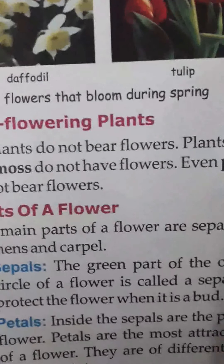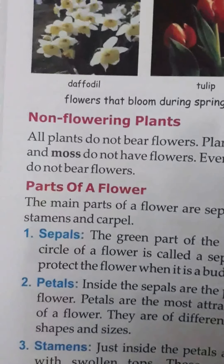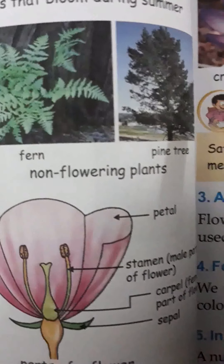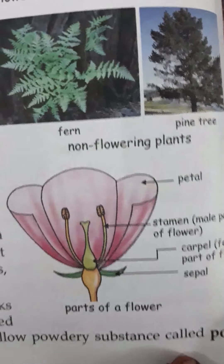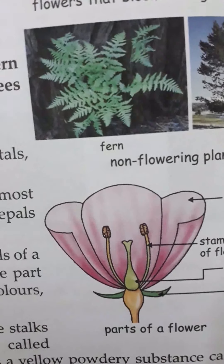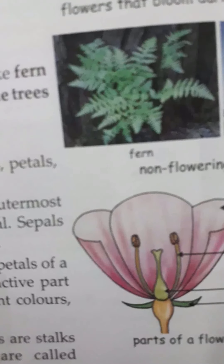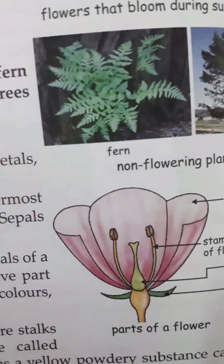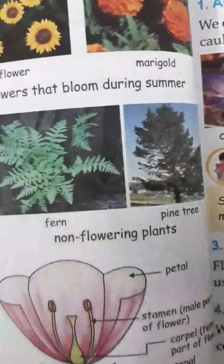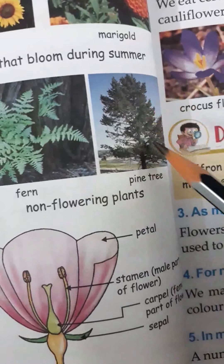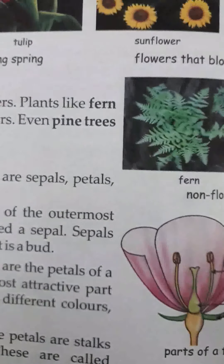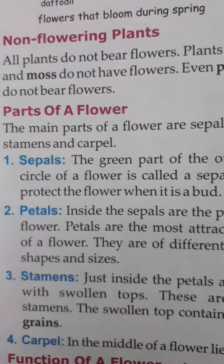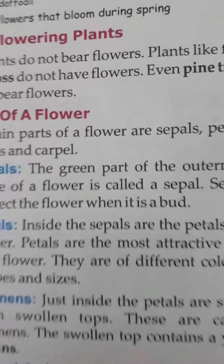Non-flowering plants — at the beginning of the chapter we talked about some plants that have no flowers. Plants like fern and pine tree do not have any flowers. Grass, weed — these are all plants which have no flowers at all. Even pine trees, which are seen in cold regions, do not have flowers. Children, I will teach you parts of a flower in the next class. Thank you.